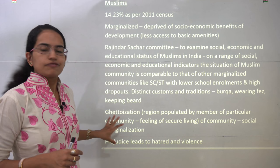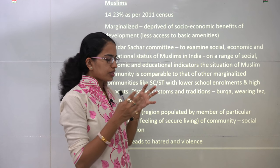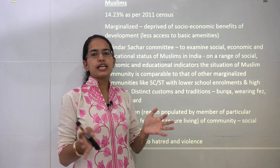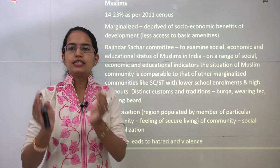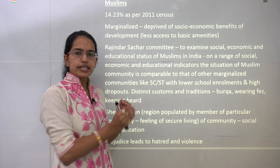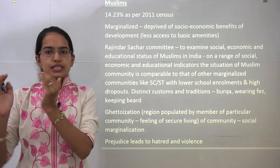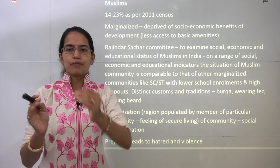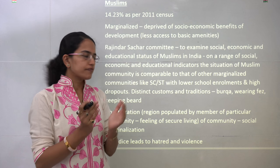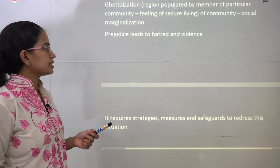The Sachar Committee also talked about the formation of ghettos, noting that the Muslim community has been distinct due to its customs and traditions. Ghettoization means that a specific region in a city is demarcated and populated by a specific community — there is a feeling of security among the people there. However, as a result, they become further marginalized and moved to the fringes, and this process is called social marginalization.